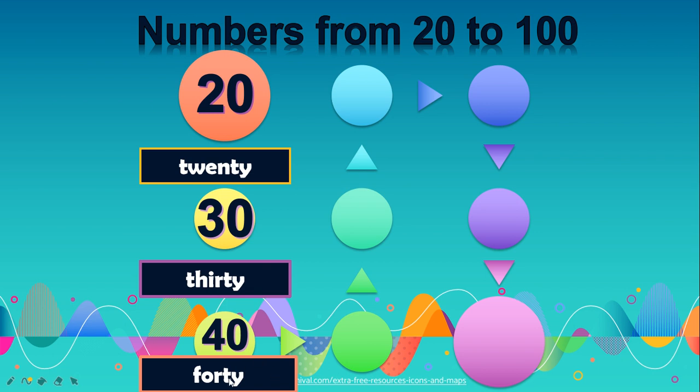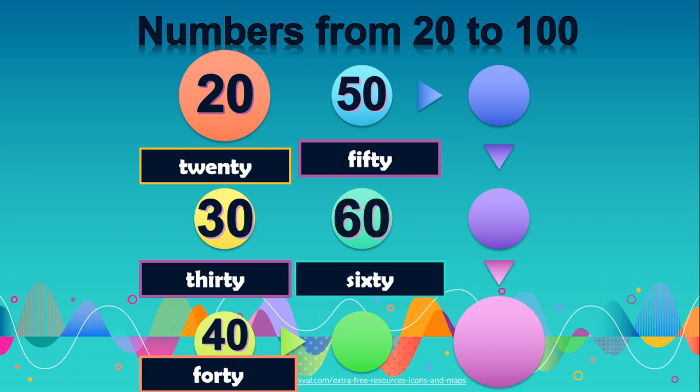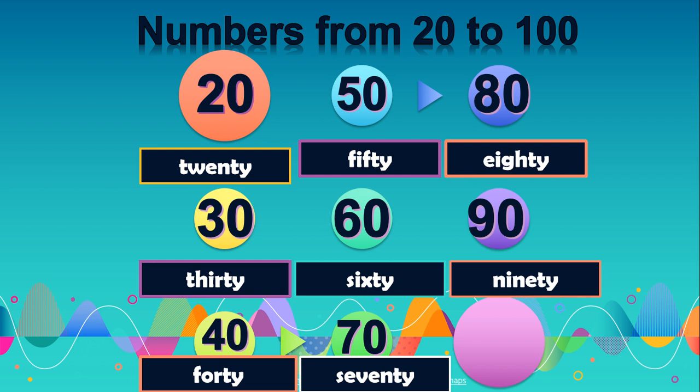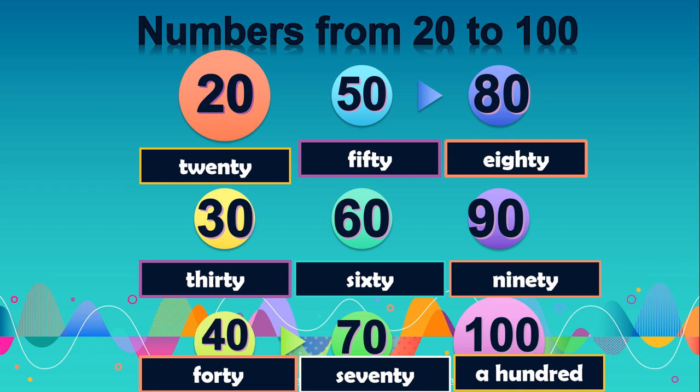So after 40 is 50. How to spell 50: F-I-F-T-Y. Then 60: S-I-X-T-Y. Seventy: S-E-V-E-N-T-Y. Eighty: E-I-G-H-T-Y. Ninety: N-I-N-E-T-Y. And 100. You may write a hundred or you can say one hundred.